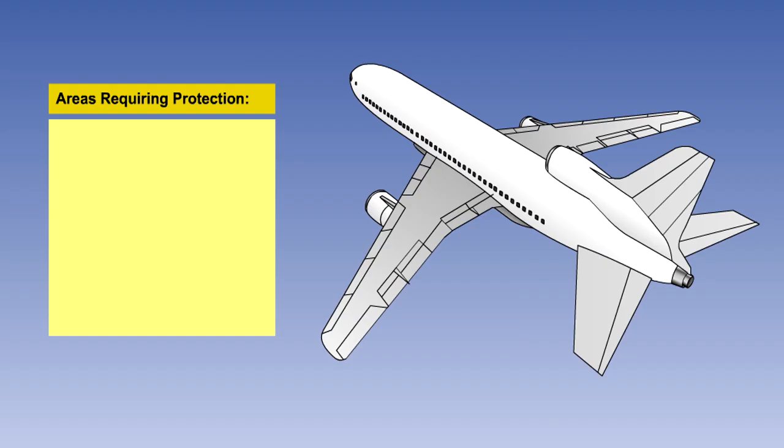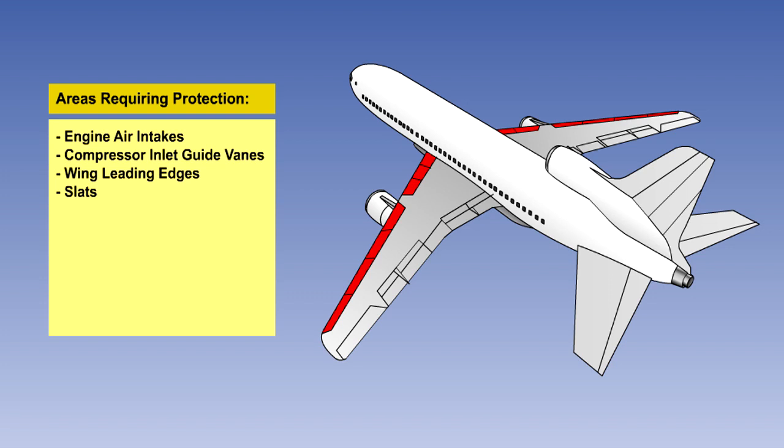The following systems and components need to be protected from ice and rain. The engine air intakes and compressor inlet guide vanes need to be protected, as do the wing leading edges, along with slats if they are fitted.